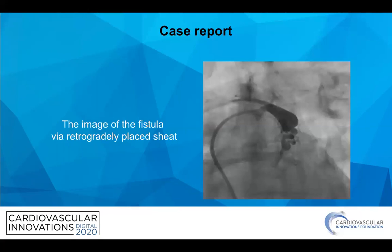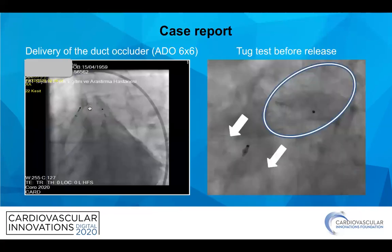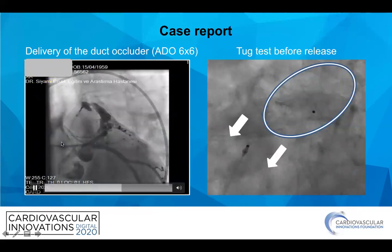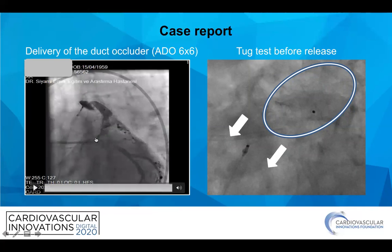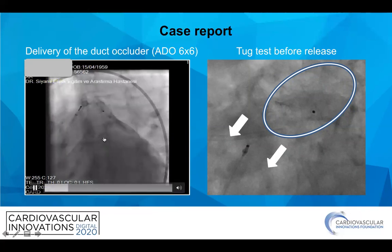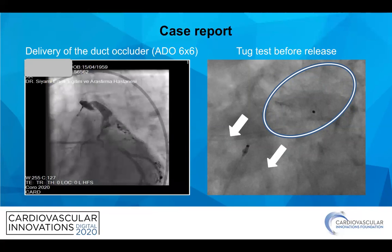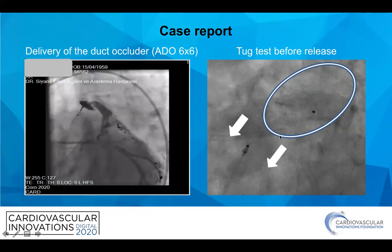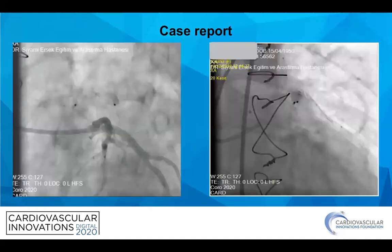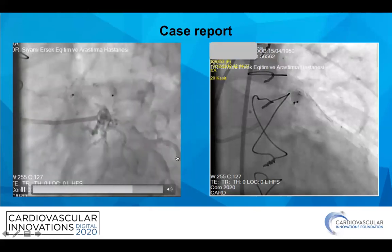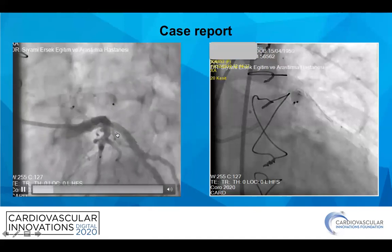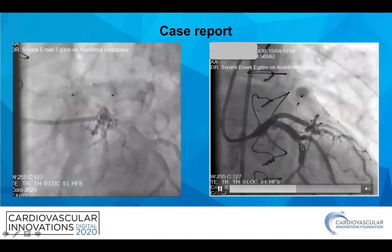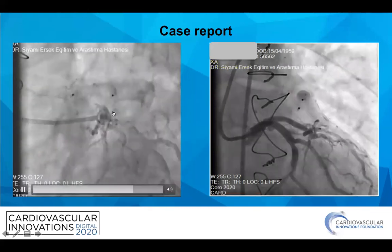You can see the image of the fistula via the retrogradely placed sheath. After deciding the appropriate size of the closure device, we cautiously delivered the Amplatzer duct occluder device, six by six, in a retrograde fashion, and we did this with the help of antegrade imaging. Before releasing the device, we performed a tug test and confirmed the stability of the device. Before finishing the procedure, after waiting five to ten minutes, we took our last shots and confirmed total occlusion of the fistula.